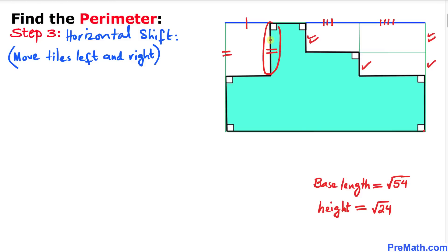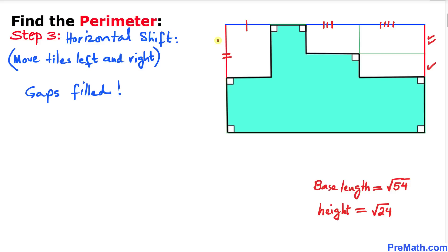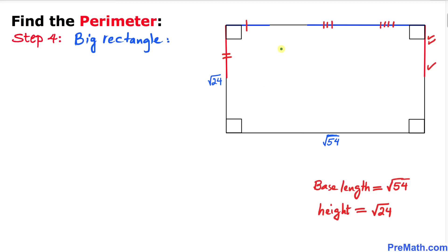In the next step we move our tiles horizontally. This tile moves to the left, this tile moves all the way to the right, and this tile likewise goes to the right. These gaps have been filled successfully as well, and here is our big rectangle once all gaps are filled.